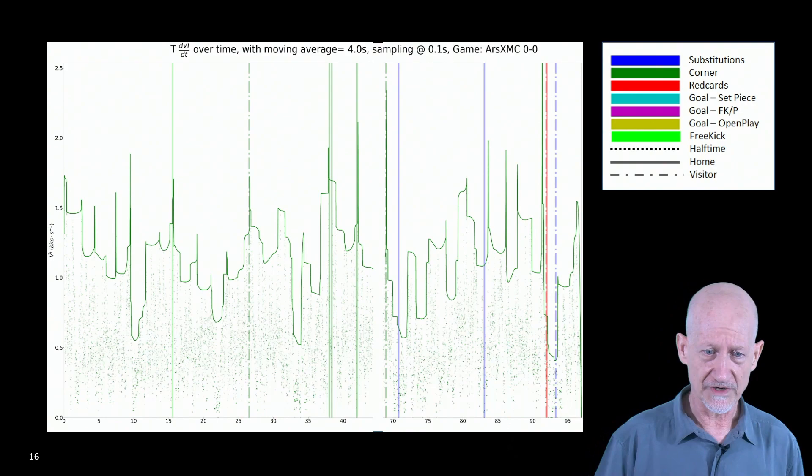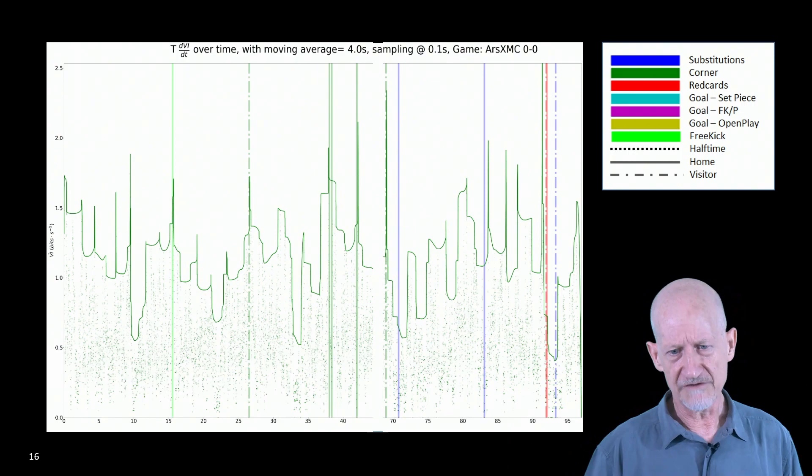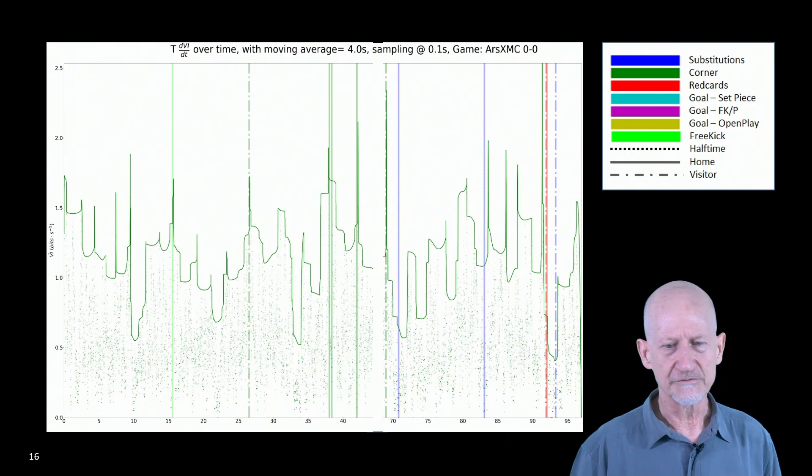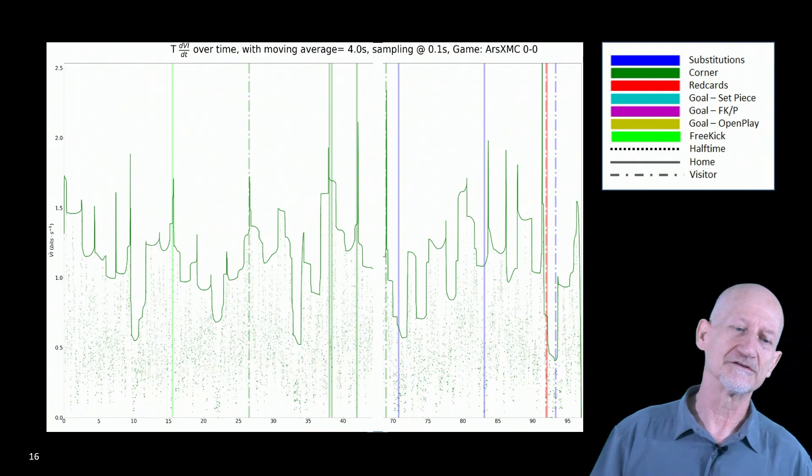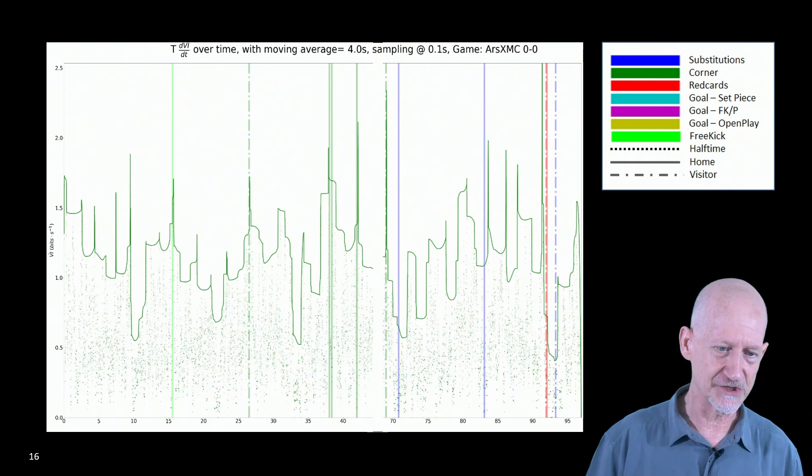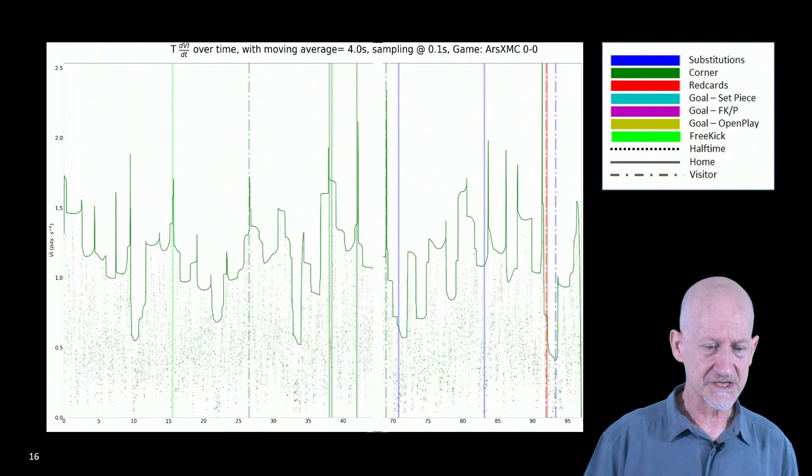Let me finish just by showing you a graph of one match that we looked at. Every match has about 60,000 observations, we have a few thousands in here, and we can see, for instance, every single point, every single green point is one observation, the solid line is the maximum envelope of the variation of information, and the vertical lines are events that occur during the game.